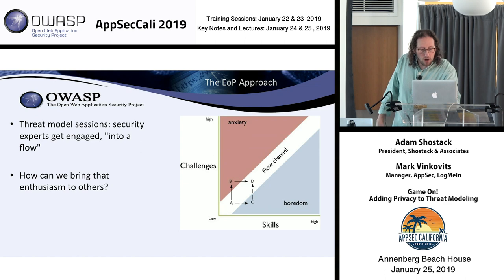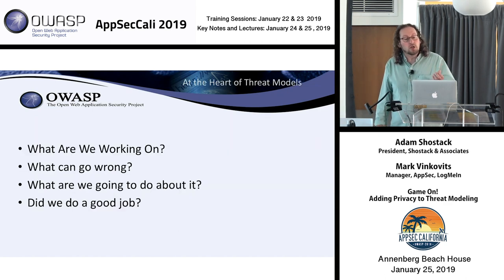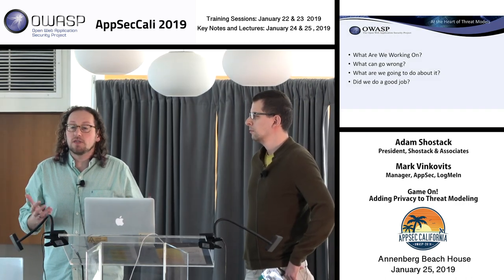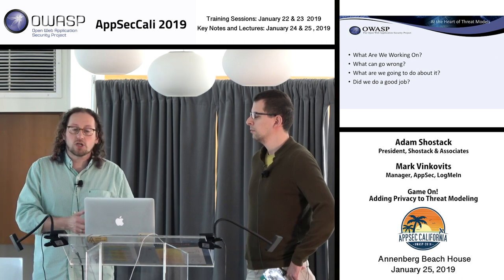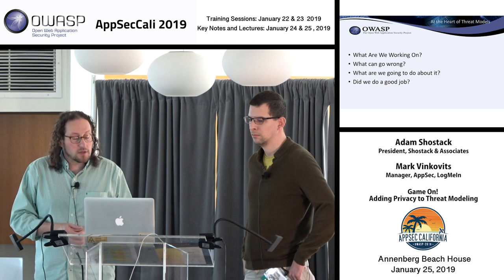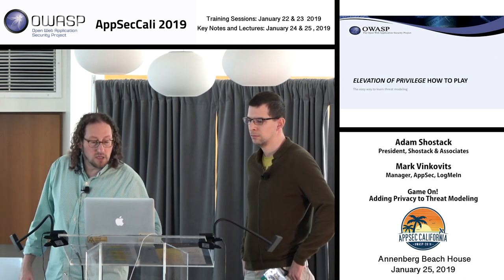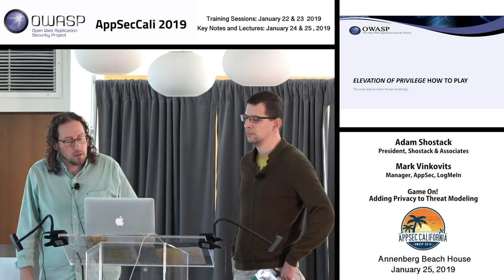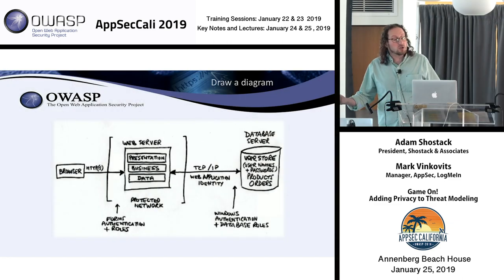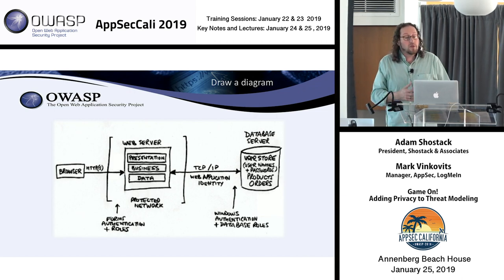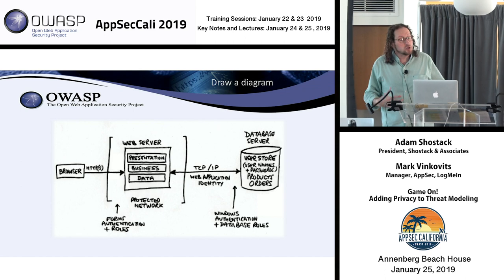When I think about threat modeling, I think about four key questions: What are we working on? What can go wrong? What are we going to do about it? And did we do a good job? There are lots of ways to answer each of these. Elevation of Privilege was created to be the easy way to learn how to threat model — we start with something super simple, like a whiteboard diagram. In software, we draw diagrams like this all the time, and that's what you do to get started: draw a picture.